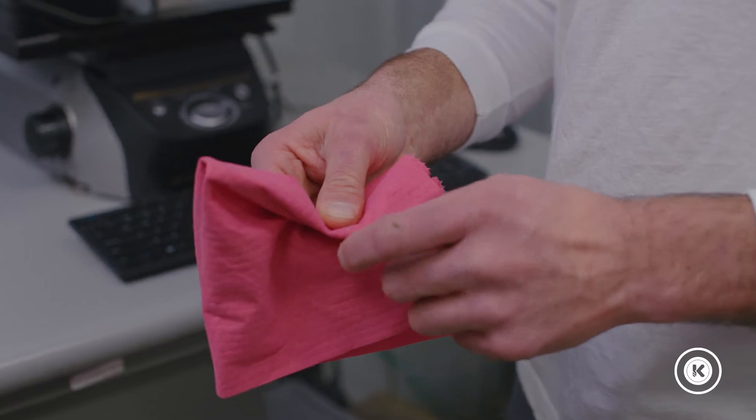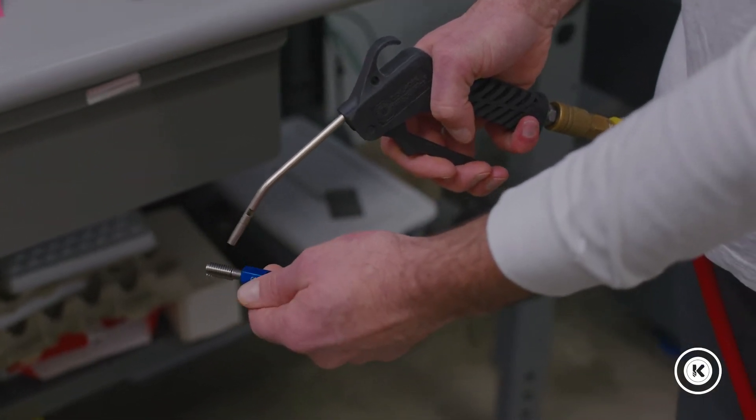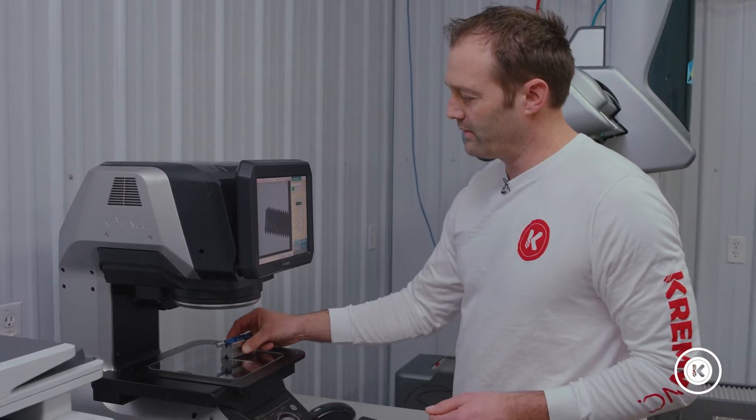First thing I should probably do is clean the gauge. We'll take this off real quick for a minute. All right, now that we have a clean gauge, we'll show you a few quick steps to check the pitch diameter, major and minor.